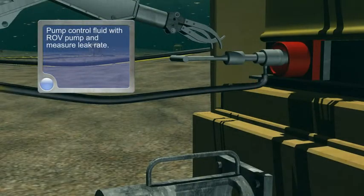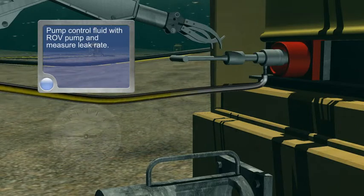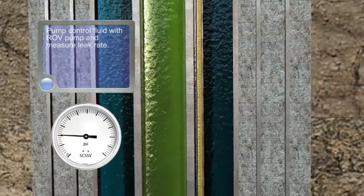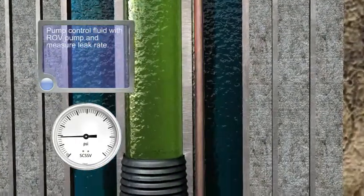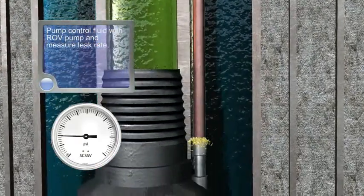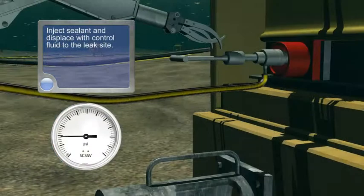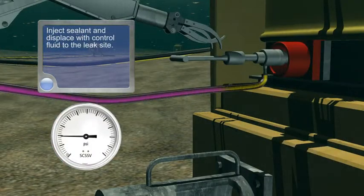Pump Control Fluid with ROV Pump and Measure Leak Rate. Inject Sealant and Displace with Control Fluid to the Leak Site.